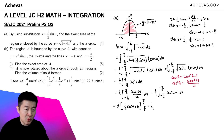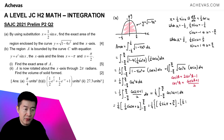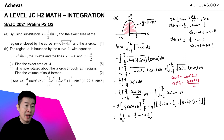Substituting the upper limit π/2: ½sin(2 × π/2) = ½sin(π) = 0, plus π/2. Substituting the lower limit -π/2: ½sin(-π) = 0, minus π/2. So we have ¼ × [(0 + π/2) - (0 - π/2)] = ¼ × π = π/4. The answer for part A is π/4.